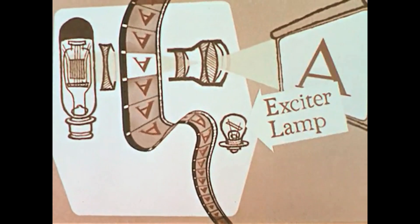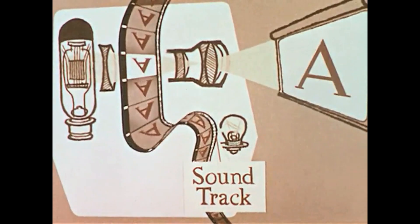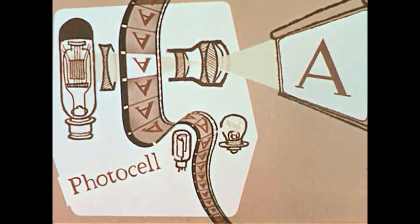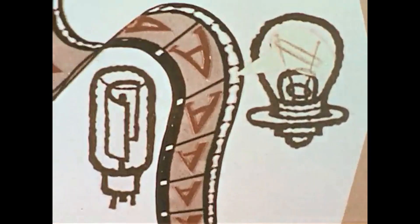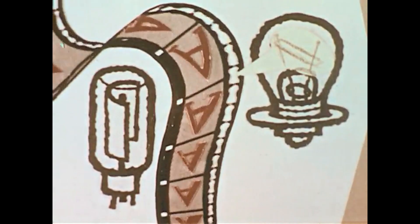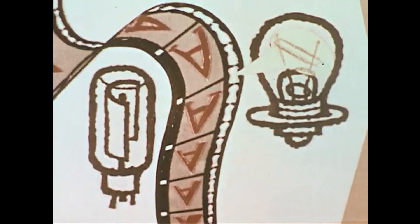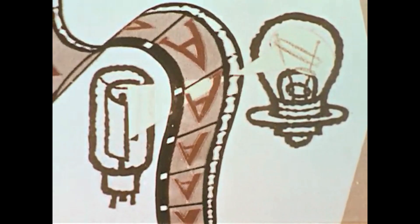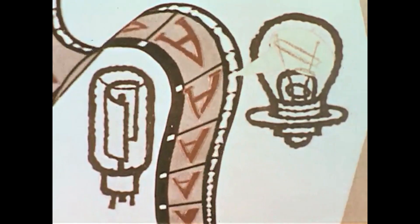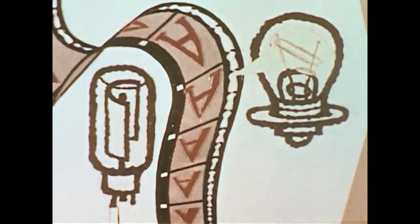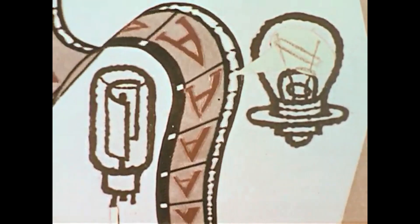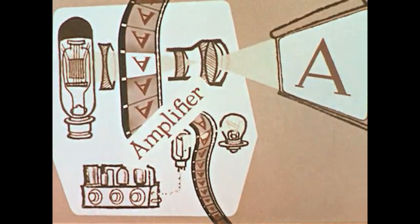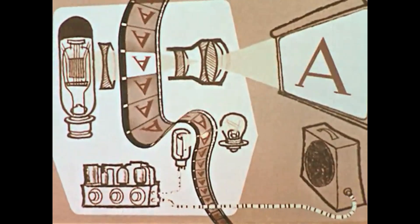Here an exciter lamp passes light through the soundtrack area of the film. This light is received by the photocell. Sound waves, which have been recorded as variations of light and dark areas on this film, cause the light beam reaching the photocell to vary in brightness. When the film moves, the photocell produces electrical pulsations corresponding to the original sound, which are then amplified and fed to the speaker.